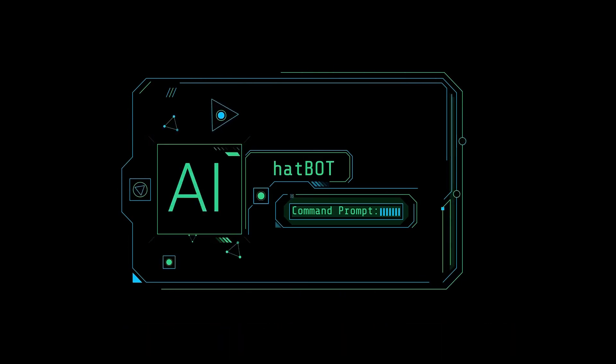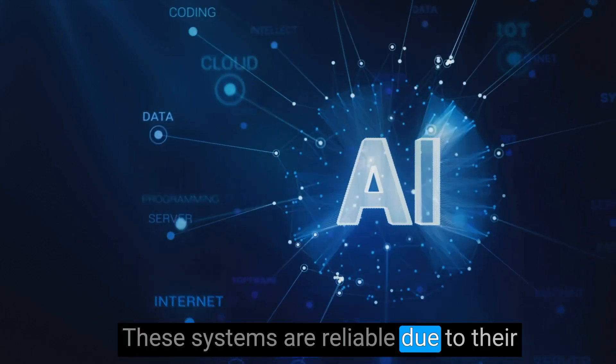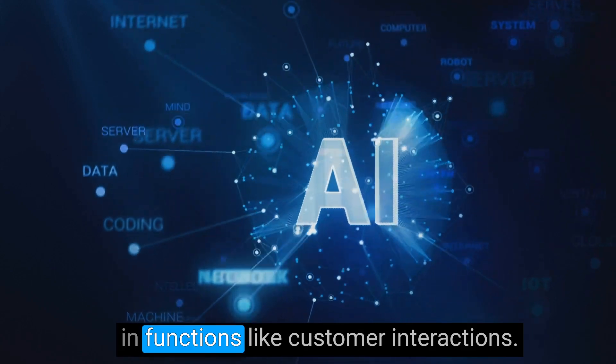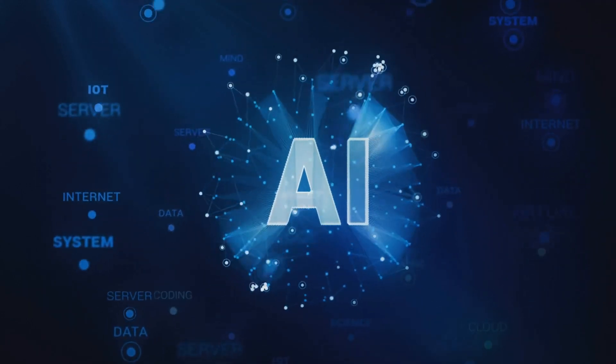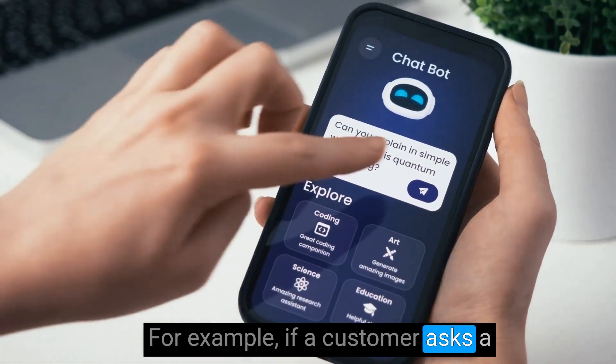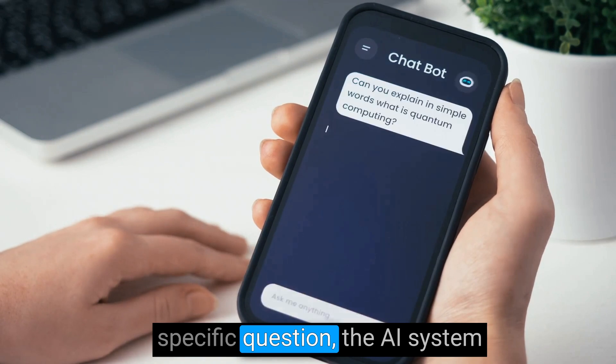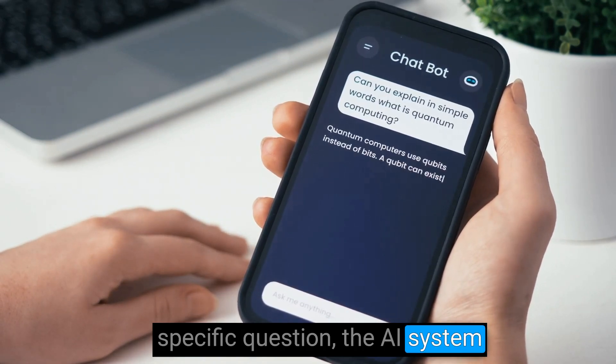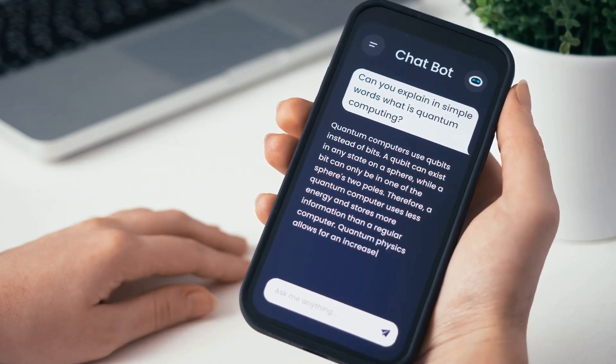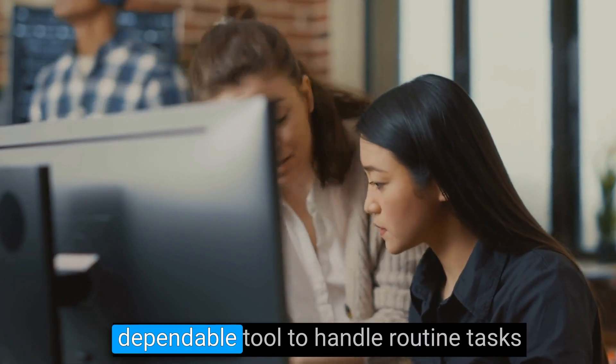These systems are reliable due to their predictable nature, offering consistency in functions like customer interactions. For example, if a customer asks a specific question, the AI system responds based on its programmed rules. This offers budding businesses a dependable tool to handle routine tasks effectively, allowing human employees to focus on more complex issues.